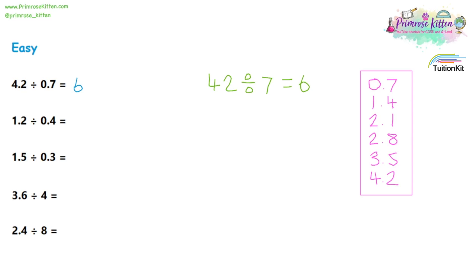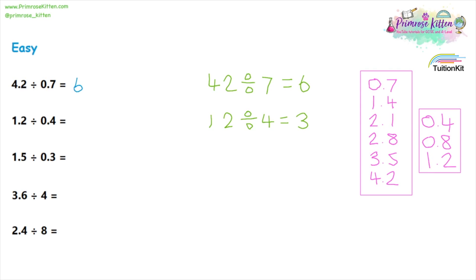Let's try that for the next two questions. Question two: 12 divided by 4, ignoring the decimal place, gives us 3. We can check this by doing the first method — 0.4, 2×0.4 is 0.8, and another is 1.2. So within 1.2 we can fit three 0.4s, giving us the same answer. For question three, 1.5 becomes 15 and 0.3 becomes 3, so we get 15 divided by 3, which is 5.